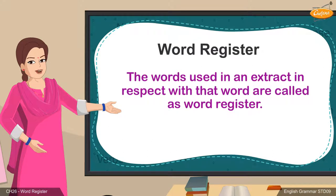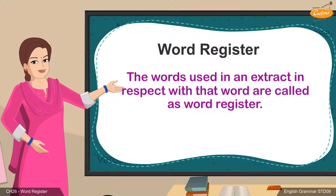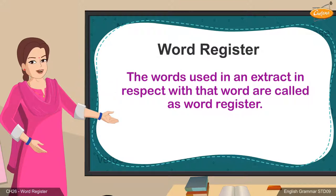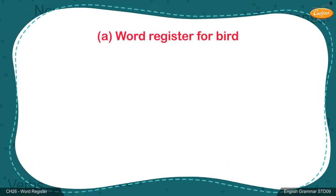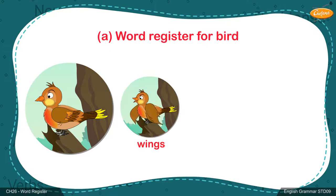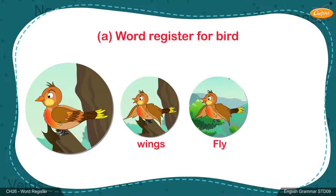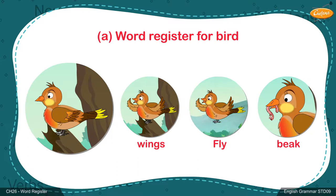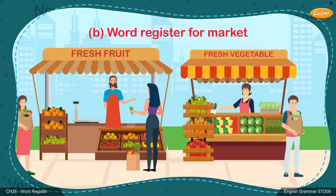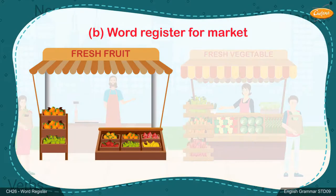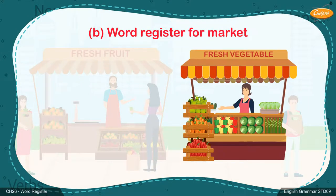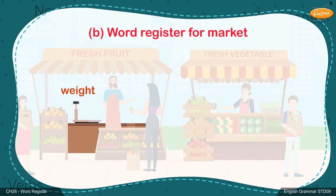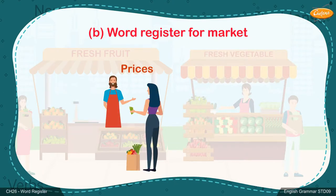The words used in an extract in respect with that topic are called word register. For example: A. Word register for bird — wings, fly, beak, etc. B. Word register for market — fruits, vegetables, weight, prices, etc.